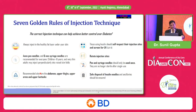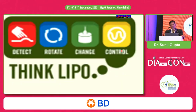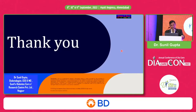The 7 golden rules for injection technique: always inject in the healthy fat layer under the skin; use 4 mm pen needles and 6 mm syringes; for children under 6 years or very thin adults, inject perpendicular or use a skin fold; recommended sites are abdomen, upper thighs, upper arm, and upper buttocks; teach self-injection technique; check for lipo regularly; rotate sites properly; and ideally do not reuse pen needles or syringes. Safe disposal of needles is important. The new slogan: think lipo — if you think lipo, you will detect it.